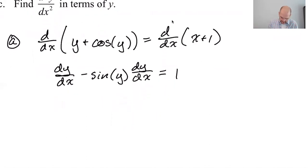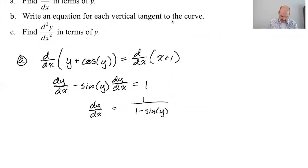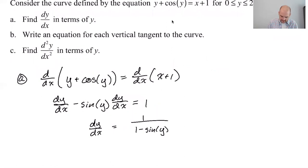And then we will take dy/dx out of both. And then I guess we can just say equals 1 over 1 minus the sine of y. And that's it. I think that is dy/dx in terms of y. So final answer there. All the work is necessary, though.